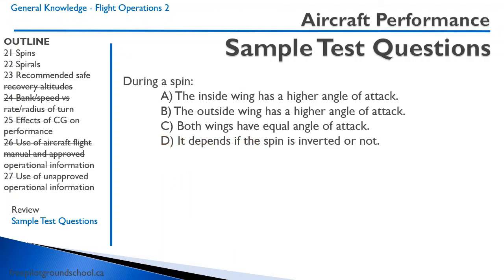During a spin: A the inside wing has a higher angle of attack; B the outside wing has a higher angle of attack; C both wings have equal angle of attack; D depends if the spin is inverted. In a spin both wings are stalled, but the inside wing is more stalled than the outside wing — it has a higher angle of attack. Answer: A.